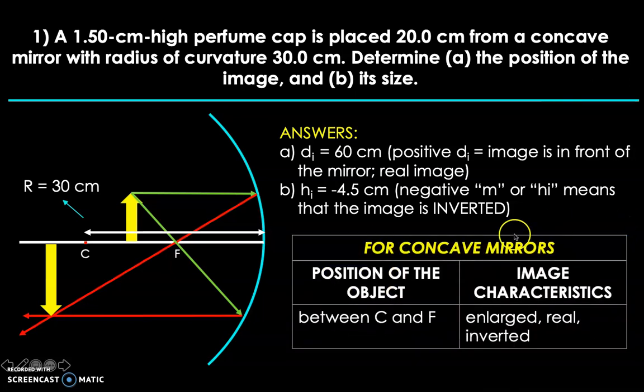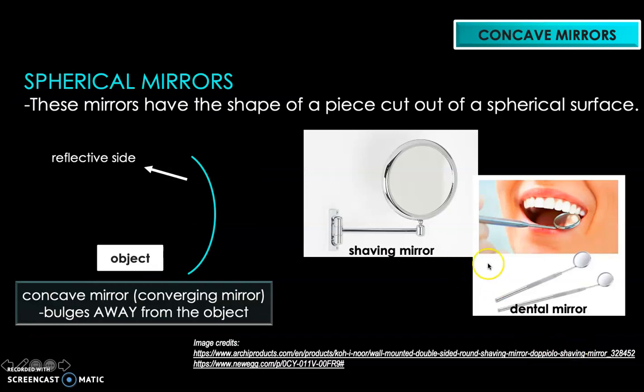In fact, for concave mirrors, whenever you position the object between C and F, the image characteristics will be enlarged, real, and inverted. And because concave mirrors can form enlarged images, unlike convex, which can only produce minimize or diminish images, they're actually used for certain purposes.